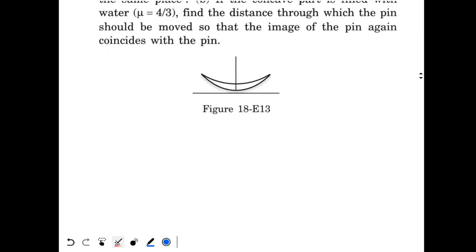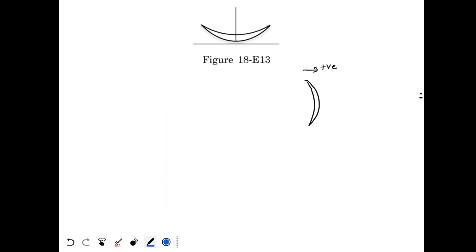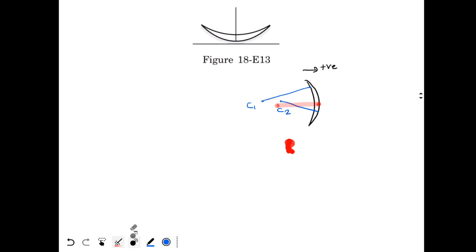First of all we need to find the focal length of the convex lens. Let's draw the lens first. If we take this direction as positive, both the radii of the lens are negative. This is the center C1 of the first surface and this is the center C2 of the second surface. So R1 will be minus 60 cm and R2 will be minus 20 cm.